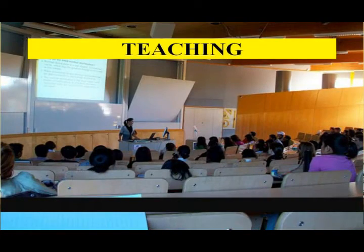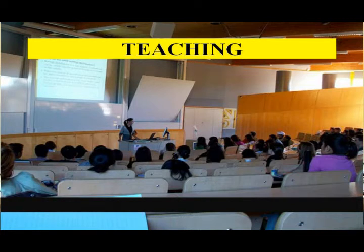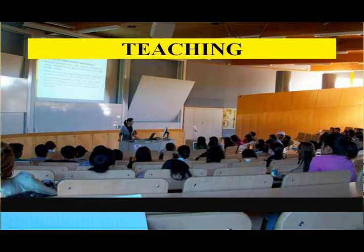Step number two: Teaching. The trainee teacher teaches the lesson in the microteaching setting. The NCRT has suggested the following setting for microteaching: time – six minutes; number of students – five to ten; supervisor – teacher educator and/or one or two peers. The lesson is observed by the teacher supervisor, peers, or via video tape or audio tape.